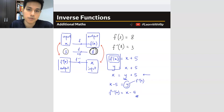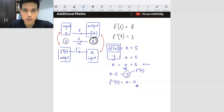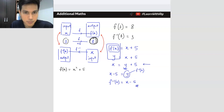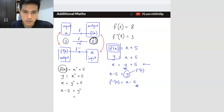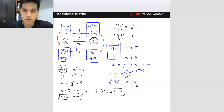Let me give you another example. Say we have f(x) = x² + 5. First, change it to y. Then swap places so y becomes x and x² becomes y². Now rearrange to get y as the subject: x minus 5 equals y², so square root of (x minus 5) equals y. From here, y is the inverse, so the equation will be f inverse equals square root of (x minus 5). This is how you do inverse functions — it's very straightforward.